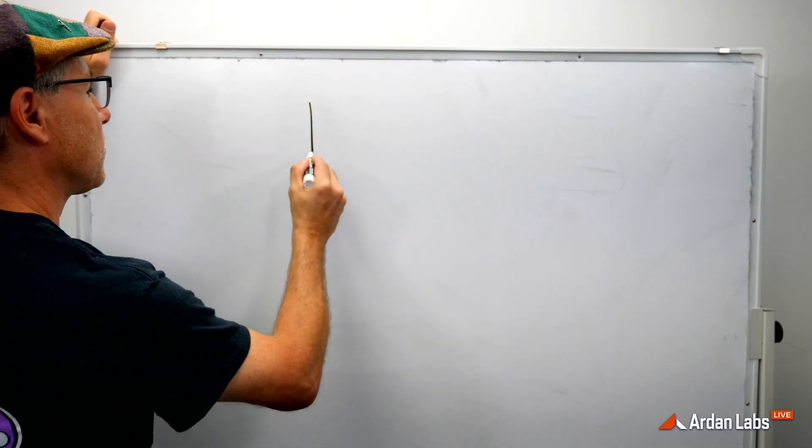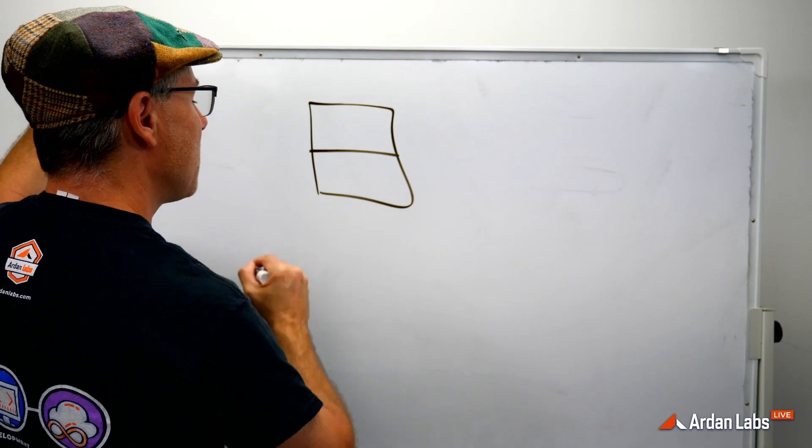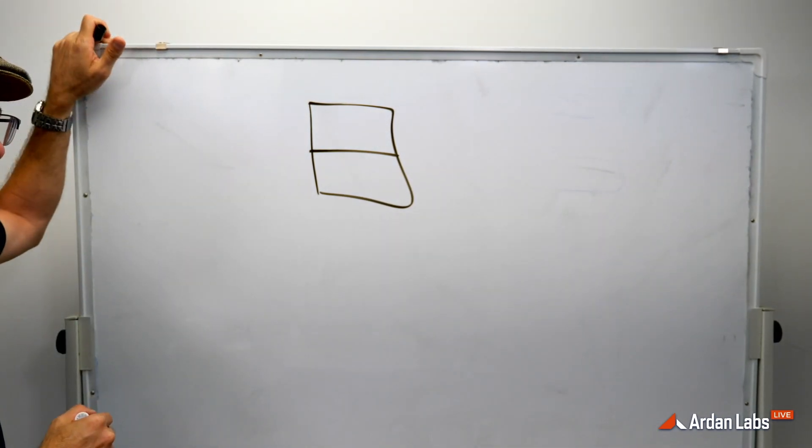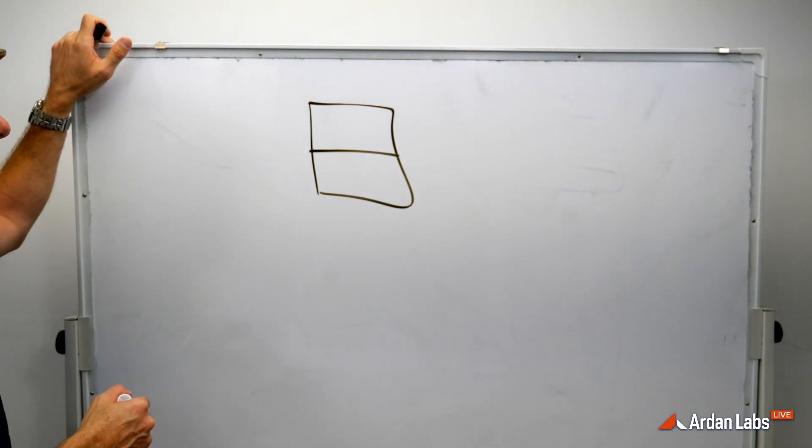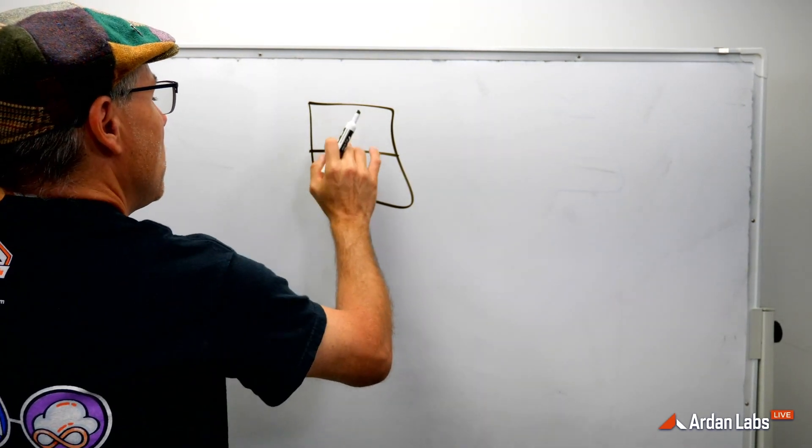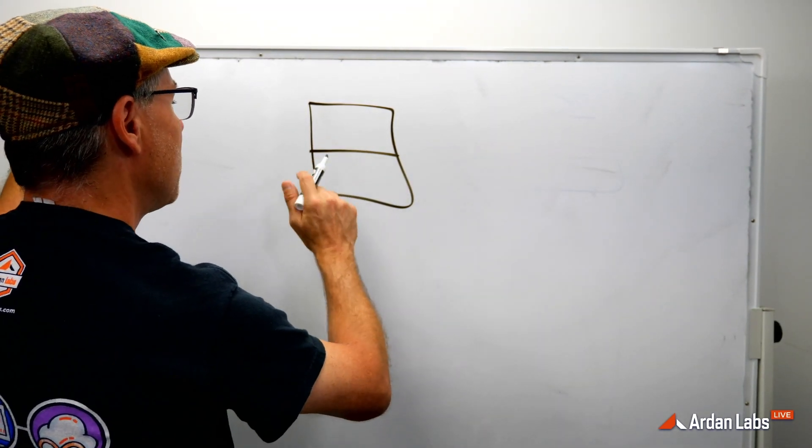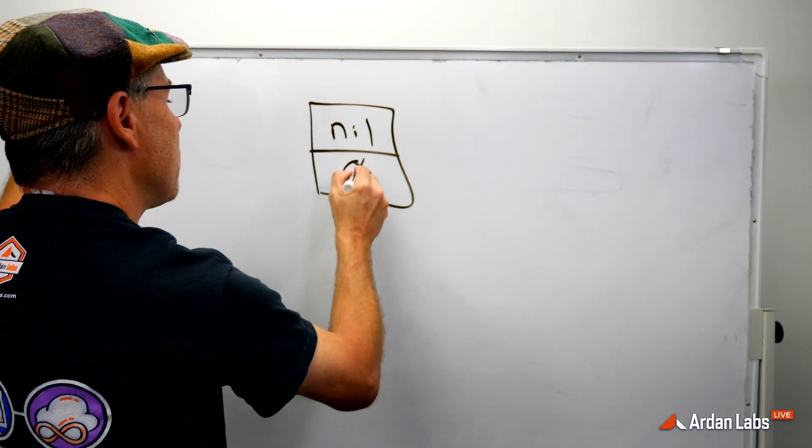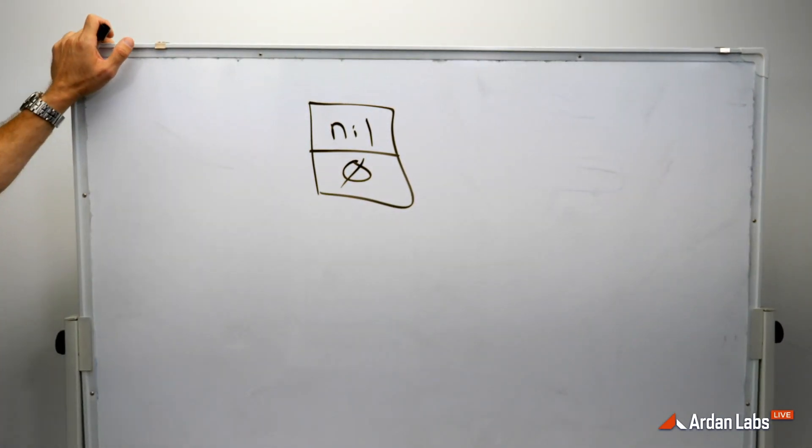A string ends up being a two-word data structure. So when we dealt with our zero value string, these two words - and we haven't gotten into pointers yet but we're going to get there very soon - these two words of data would basically look like this.